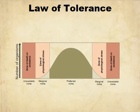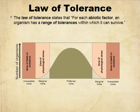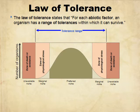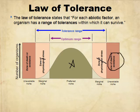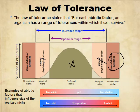The law of tolerance is similar. For each abiotic factor, an organism has a range of tolerance. For example, trout prefer conditions in the middle of their range but can survive toward the edges. Their optimum range is in the middle; beyond that, they'll die or avoid that area. Abiotic factors include pH — too acidic or too alkaline is harmful, but right in the middle is just right, like Goldilocks. The same applies to temperature and dissolved oxygen.